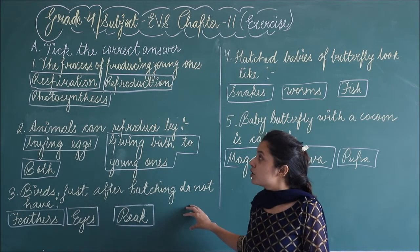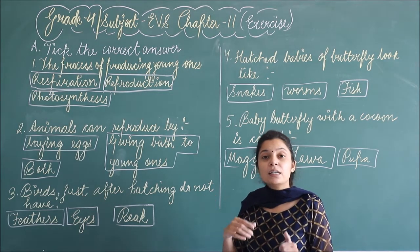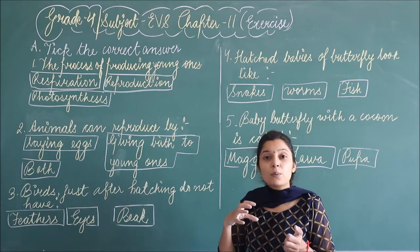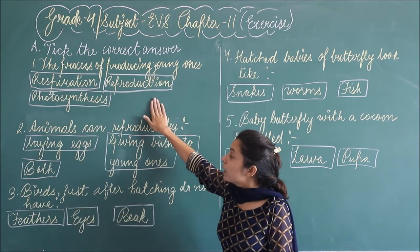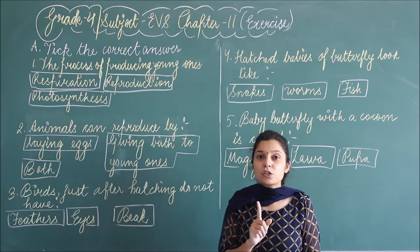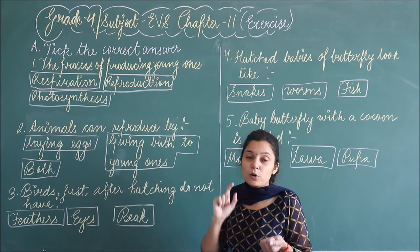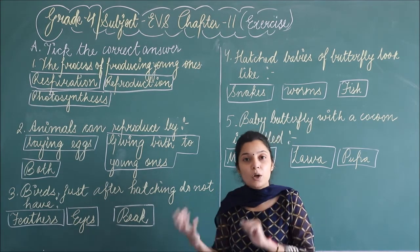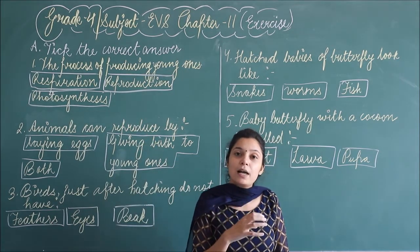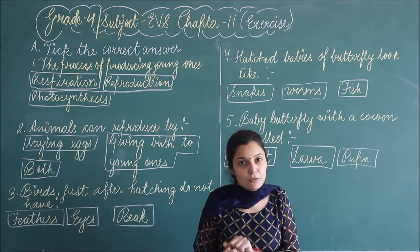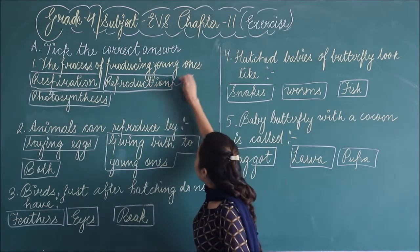Let's read the first question: the process of producing young ones — the process jis se animals apne young ones ko produce karte hain, and the young ones are of the same kind. The options are respiration, reproduction, or photosynthesis. Respiration is the process of breathing in and out. Reproduction is the natural process by which animals give birth to young ones of the same kind. Photosynthesis is the process in which plants use sunlight, CO2, and water to prepare their food. So the answer will be reproduction.